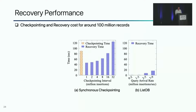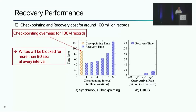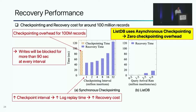Next, we evaluate the recovery performance of ListDB's asynchronous incremental checkpointing versus periodic synchronous checkpointing. The synchronous checkpointing overhead for 100 million records shows that write operations will be blocked for at least 90 seconds for every checkpointing interval, and this blocking time increases as the index size increases. Increasing the interval size can reduce the average checkpointing overhead, but it will make recovery time longer. On the other hand, ListDB's asynchronous checkpointing incurs no overhead. Also, zipper compaction checkpoints new updates very quickly, so when write queries arrive at less than 3 million per second, the system can be recovered almost instantly.